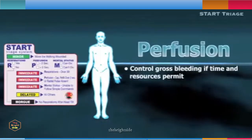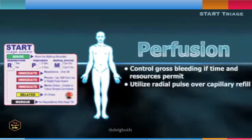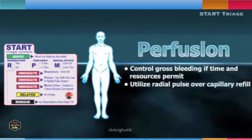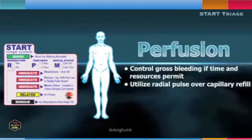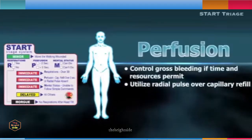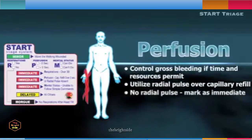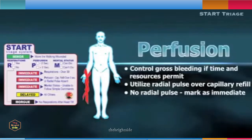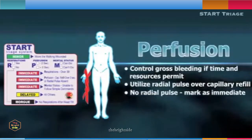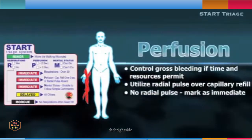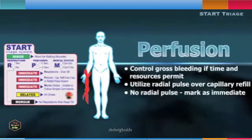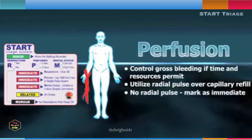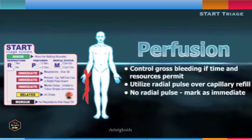The presence of a radial pulse is the most accurate rapid perfusion evaluation tool. While some publications advocate the assessment of the patient's capillary refill, this is not as accurate as a peripheral pulse check. Patients without a radial pulse should be marked immediate or red, then move on to the next patient.